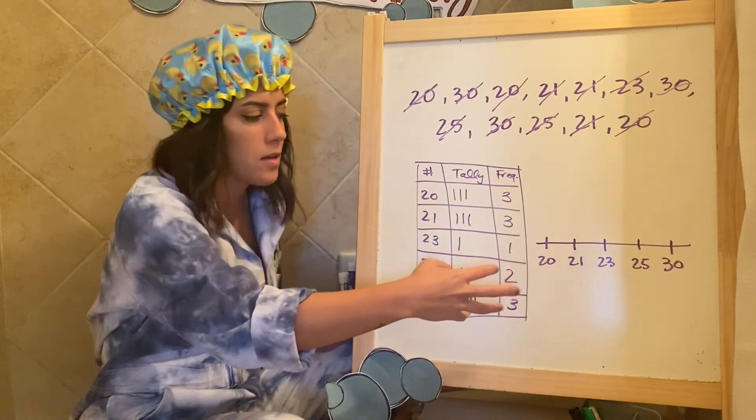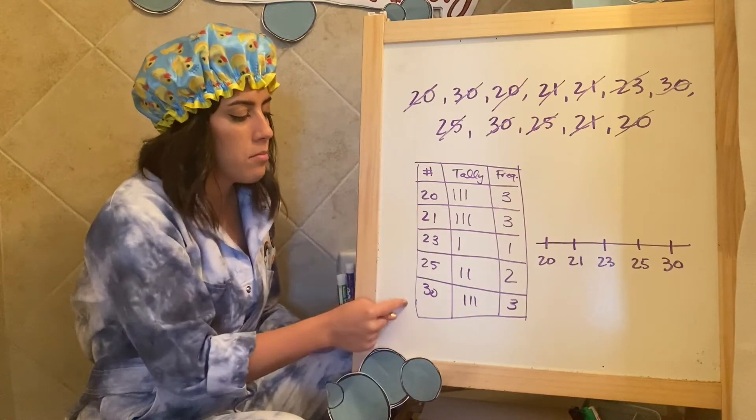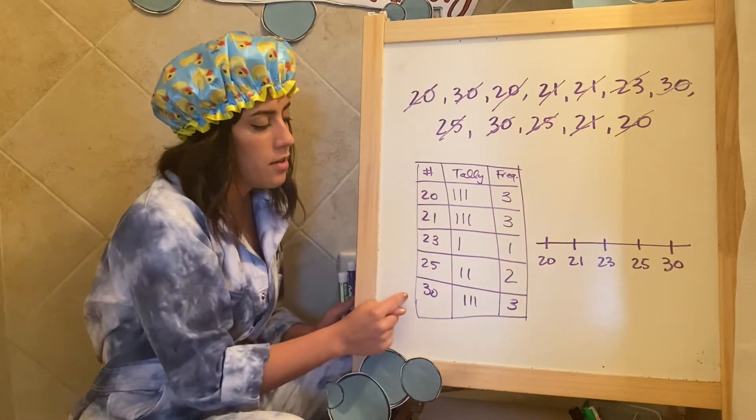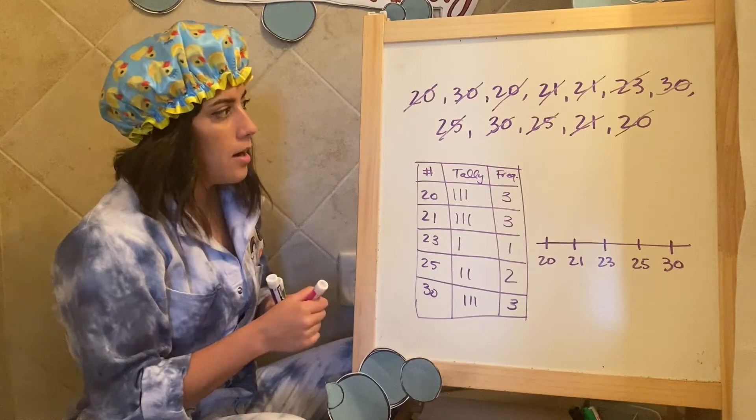But it's not precise. It's not like 2021, 22, 23, 24. It's not counting by anything in particular. All I did was make the numbers, put them in order the same way I did in a frequency table, but now on the line.